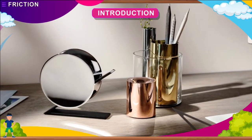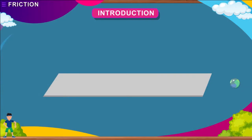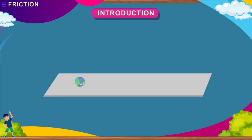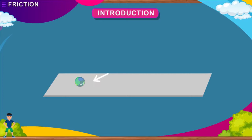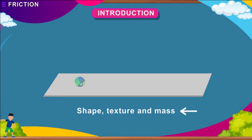We can therefore define friction as a force that slows down moving objects or prevents stationary objects from moving. The frictional force between two surfaces depends on the shape, texture, and mass of the objects in contact.